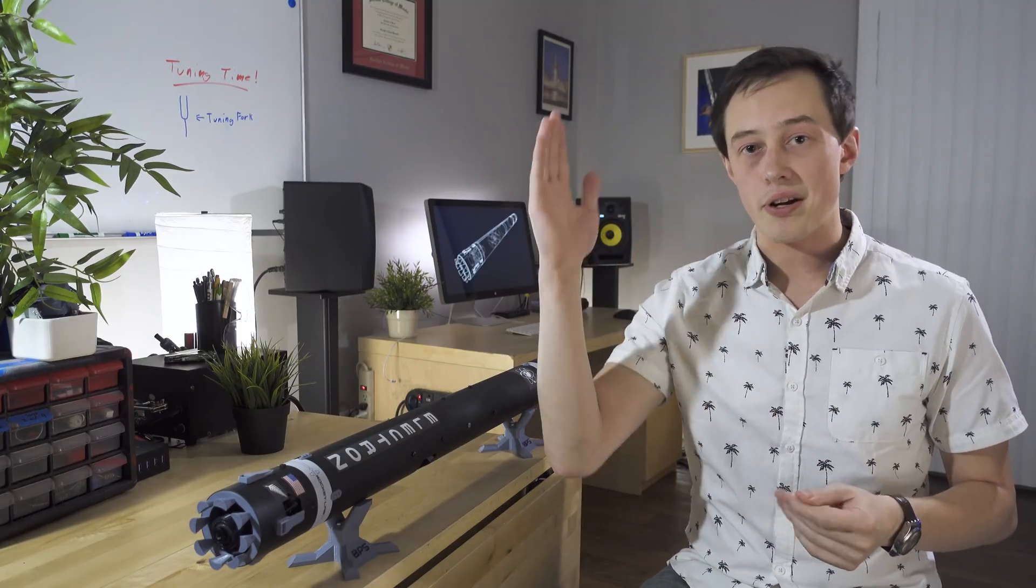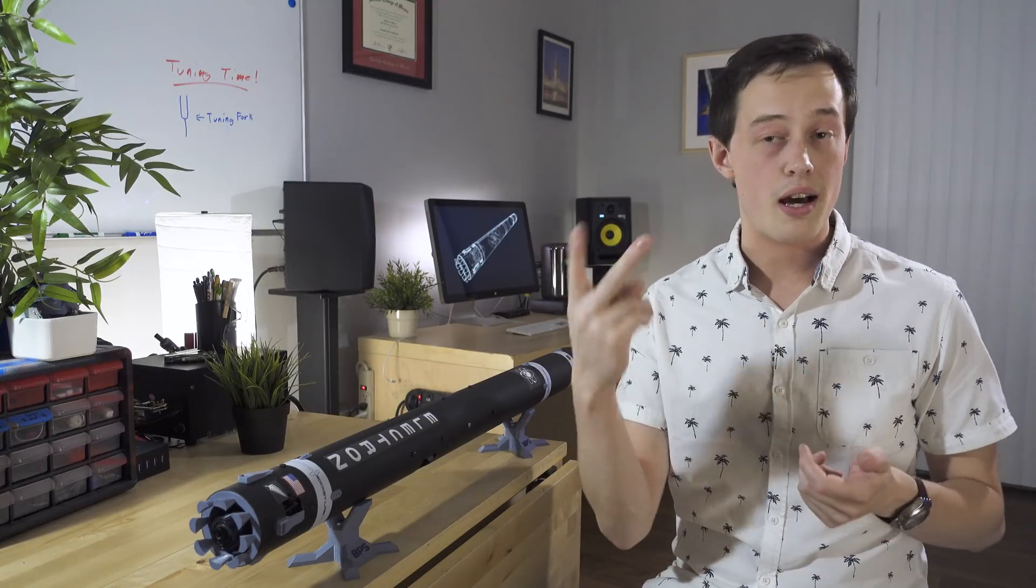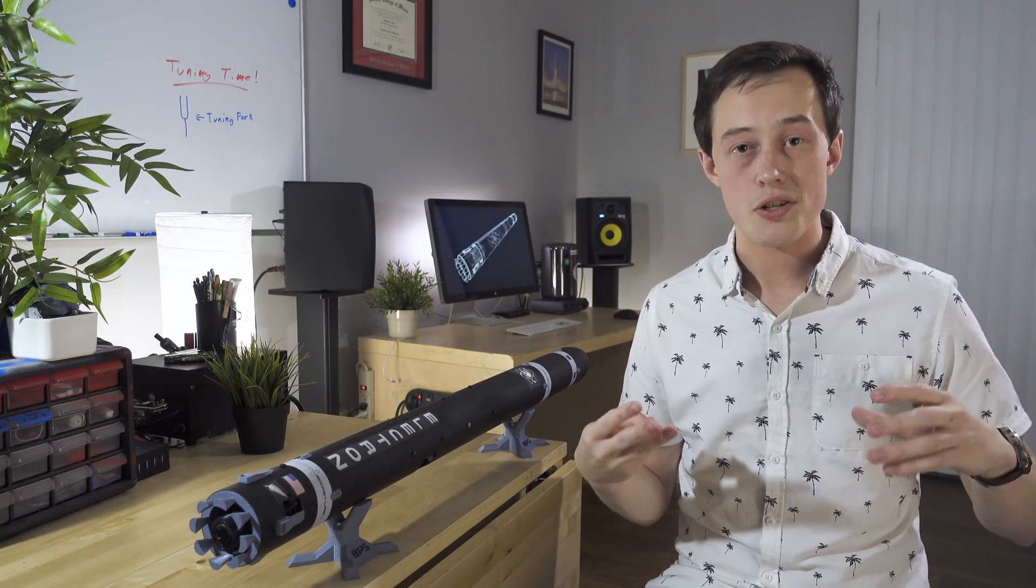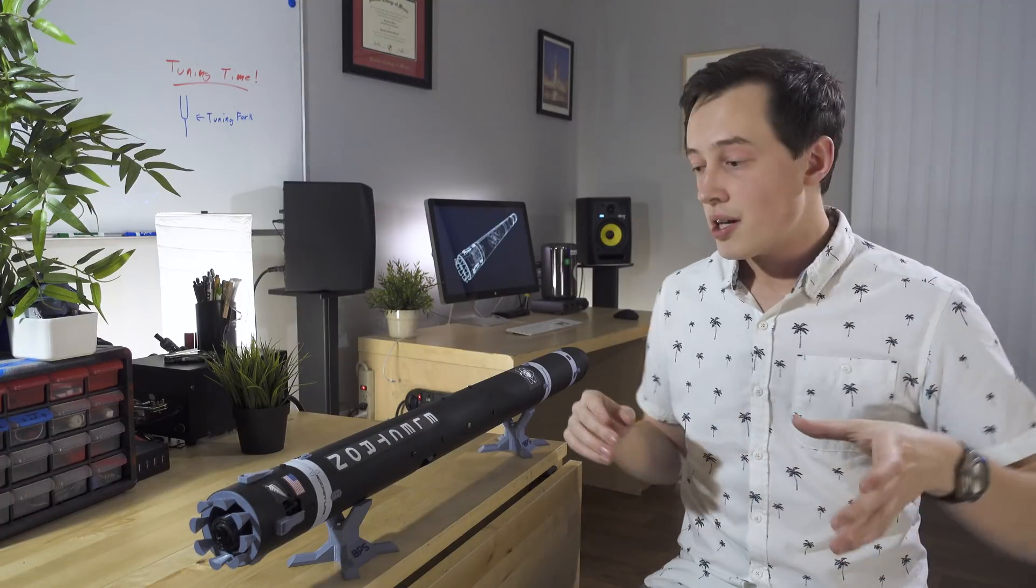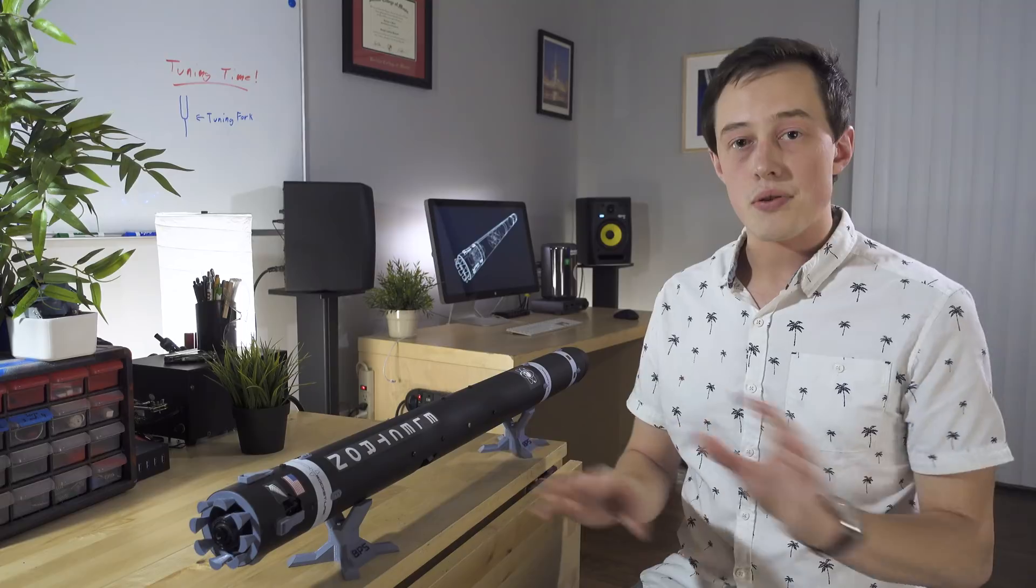What we want to do is find out how sensitive the thrust vector control system should be so that we can effectively keep the rocket upright. When you tune your rocket, it's going to give you three values: a P value, an I value, and a D value for something called a PID controller. As long as your rocket has the same mass and the same motor, those values don't need to be changed.